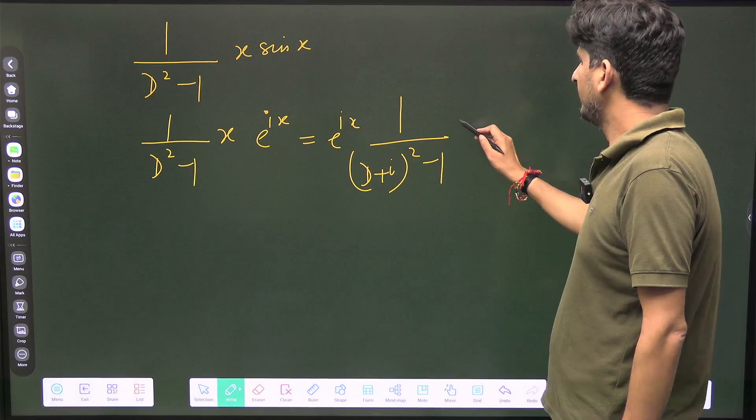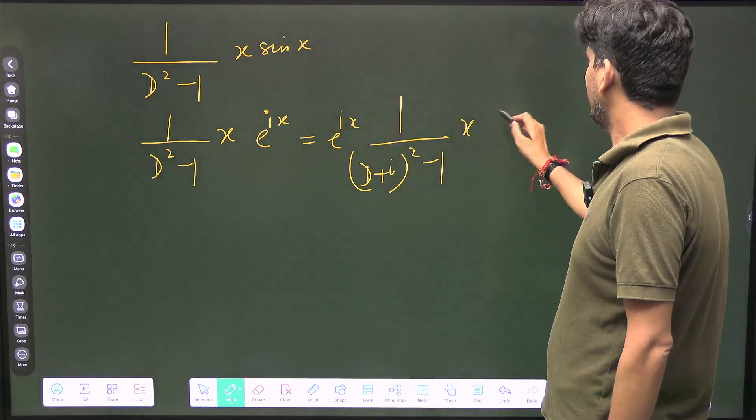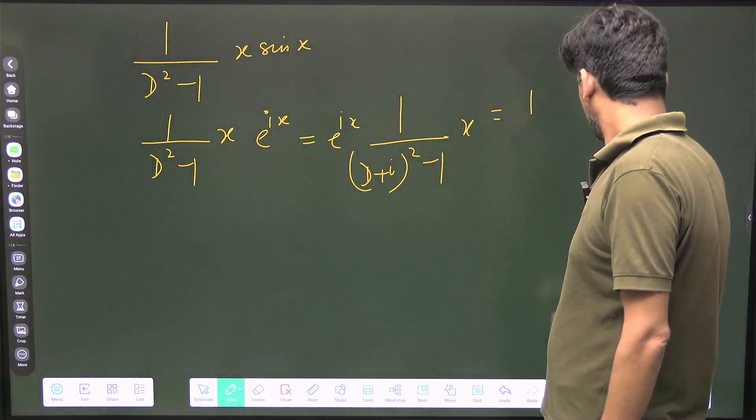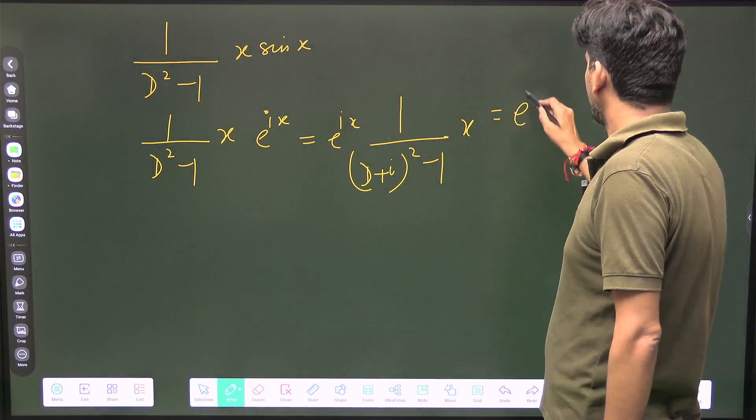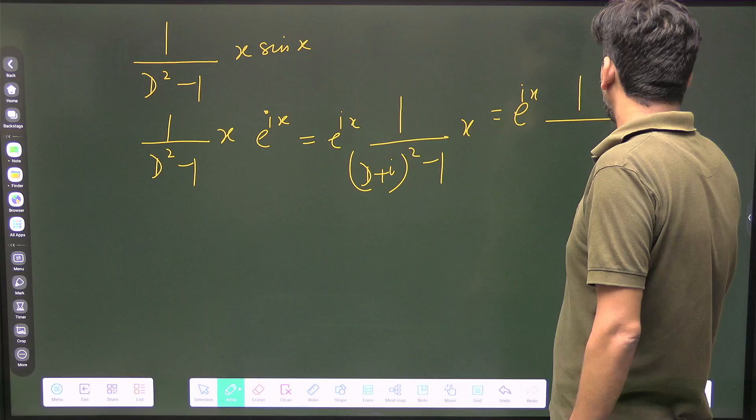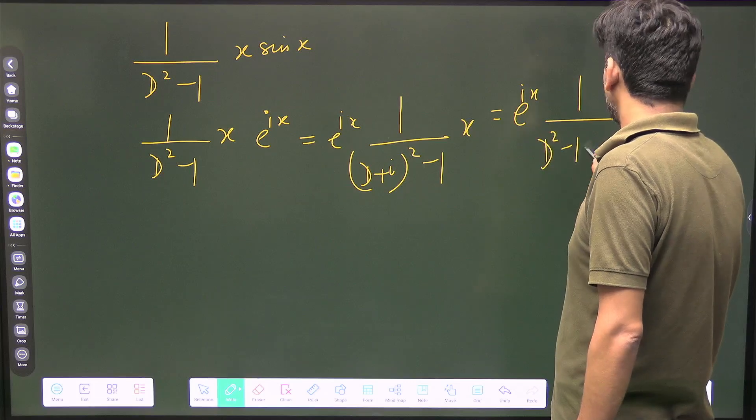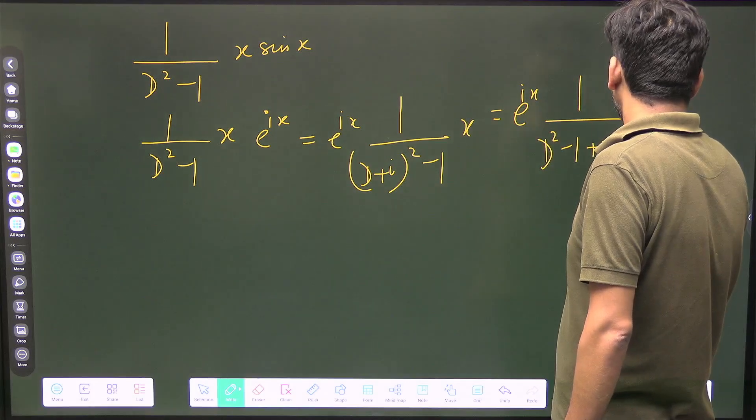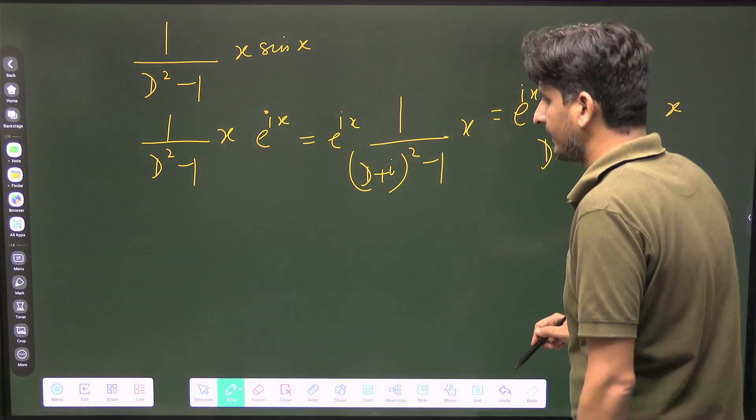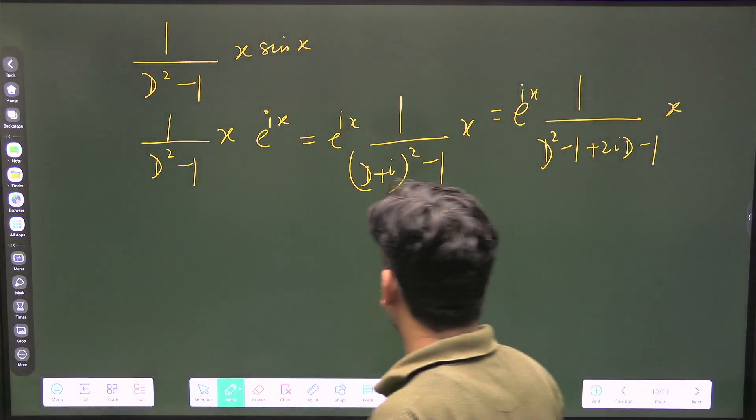Here it is e^(iota x), now this will be x, and it will be e^(iota x) / [(d + iota)² - 1] × x. And now you can take...